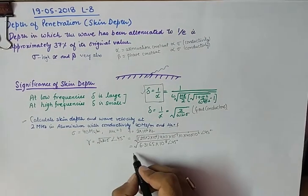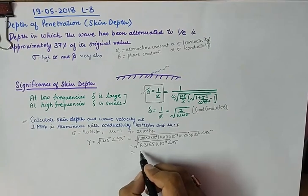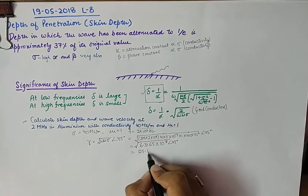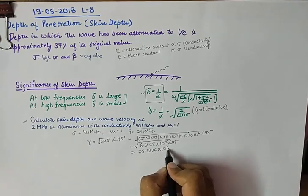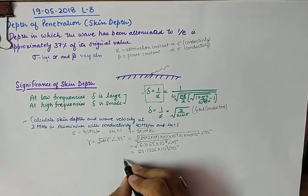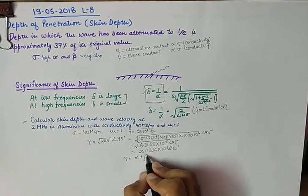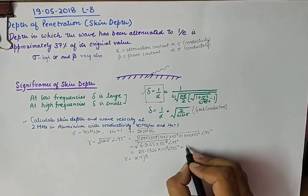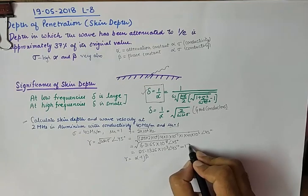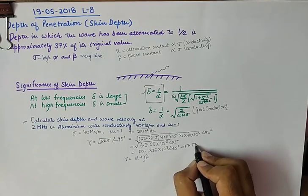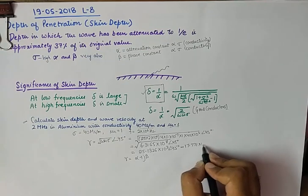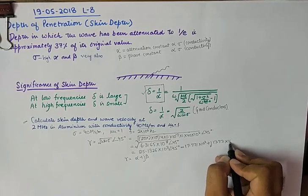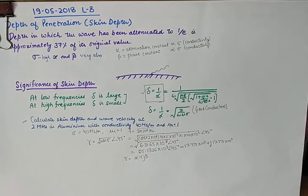And converting this into rectangular format will give me the value of alpha and beta. Because gamma is equal to alpha plus j beta. And when we convert this polar form into rectangular, you can do it on the calculator 991es. And I have made a comprehensive video on how to convert polar into rectangular and rectangular into polar using calculator.